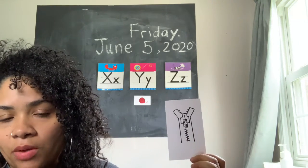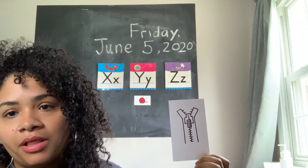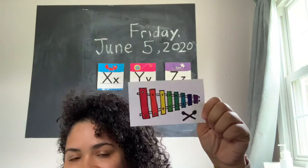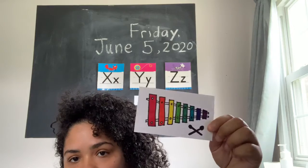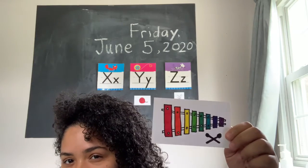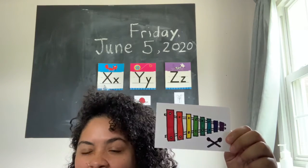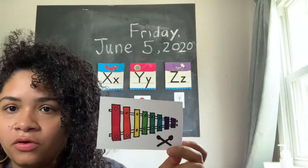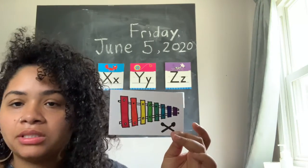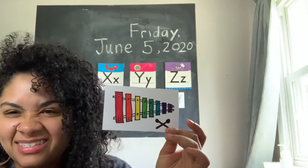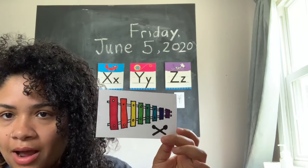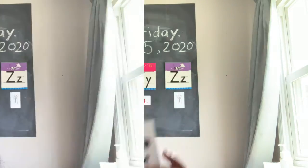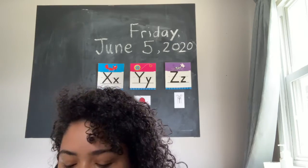So I'm going to go ahead and put zipper under the letter Z. Next one is xylophone. Xylophone is kind of tricky because it kind of sounds like it would begin with the letter Z, but it does not. Xylophone begins with the letter X, even though it doesn't make the typical X sound. So I'm going to go ahead and put this one under the letter X.